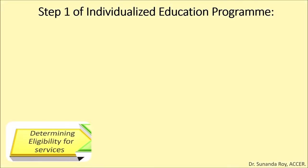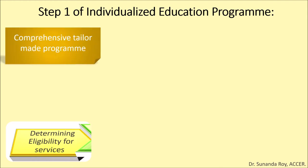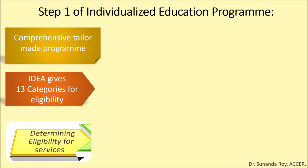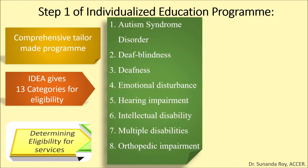The first step is determining eligibility for services. Students are selected for developing the IEP, which is a tailor-made program for each student. Before a student can receive special education services under the IEP, he or she must be evaluated for eligibility. IDEA has given 13 categories under which a child can receive these services. The categories include Autism Spectrum Disorder, Deaf-Blindness, Deafness, Emotional Disturbance, and Hearing Impairment.